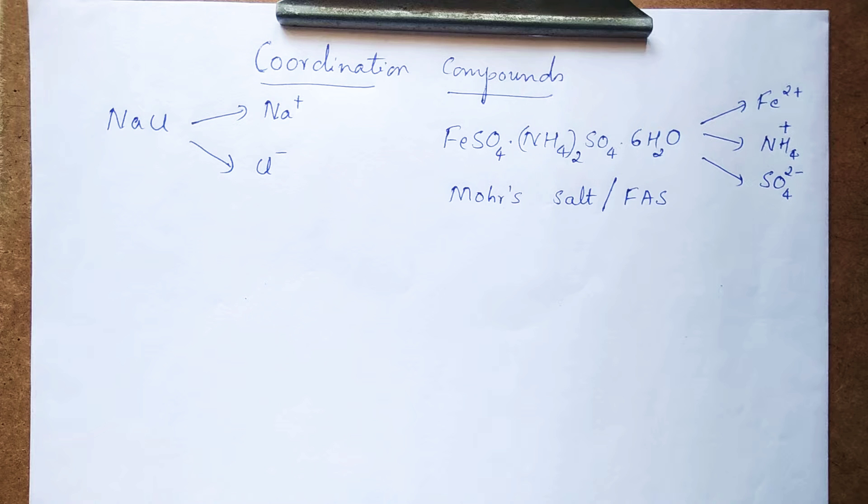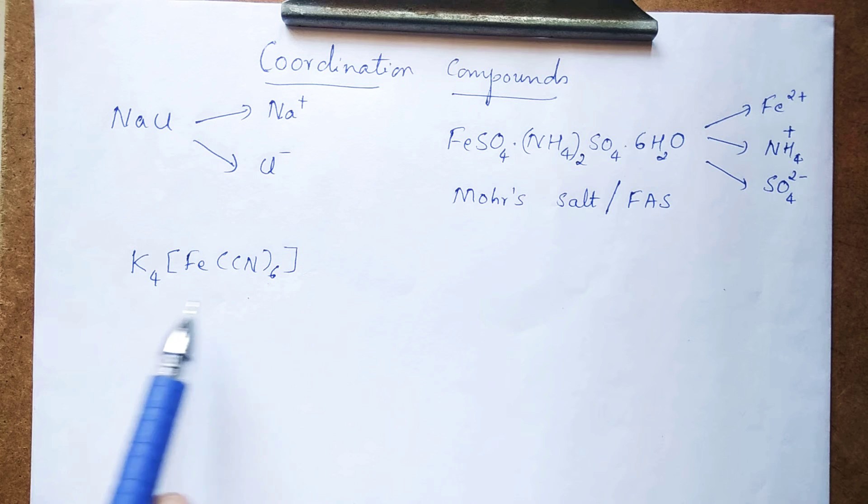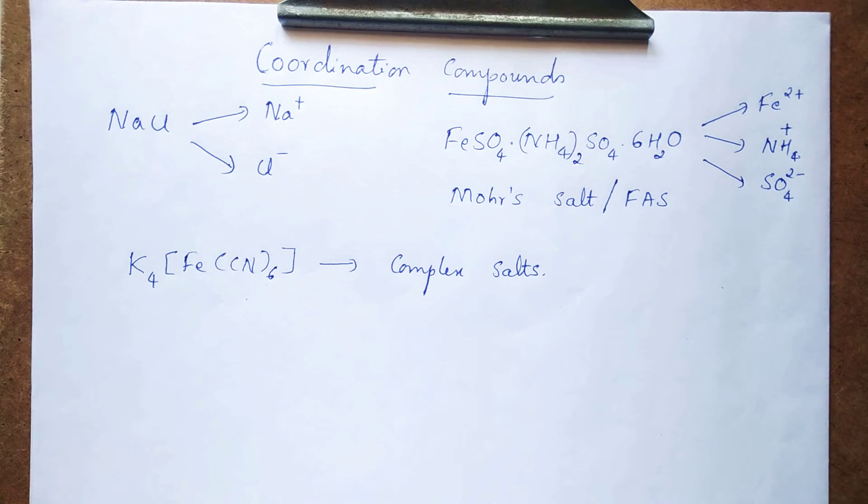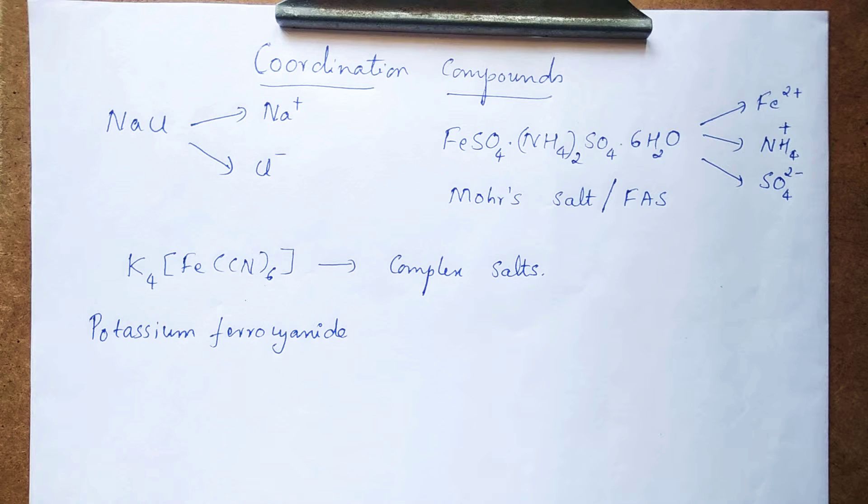But we have another set of compounds like this. The formula itself is very interesting. Some of the groups are enclosed within square brackets. Such salts are called as complex salts or they are commonly known as coordination compounds. Well, the name of this compound is potassium ferrocyanide.